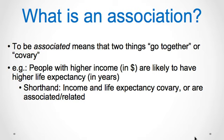Let's begin our discussion on correlations with what is an association. To be associated means that two things go together or co-vary. For example, people with higher income in dollars are likely to have higher life expectancy in years. This means that income and life expectancy co-vary, or are associated or related to each other.